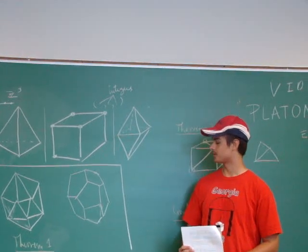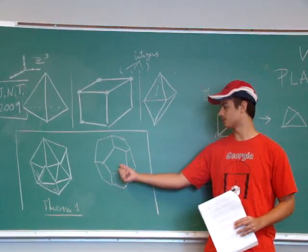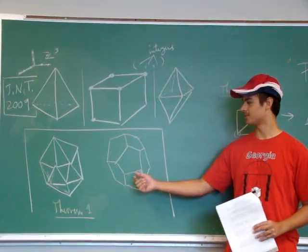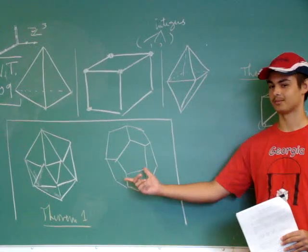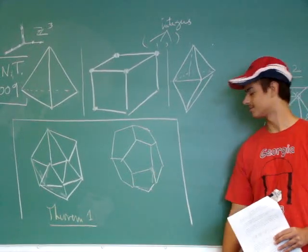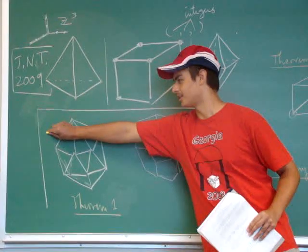Our first result is, if you look at the regular icosahedron and dodecahedron, it's very difficult to find any embedding of these in Z3. And not only is it very difficult, it is impossible.